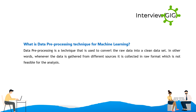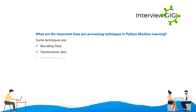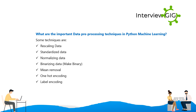What is data pre-processing? Data pre-processing is a technique used to convert raw data into a clean dataset. Whenever data is gathered from different sources it is collected in raw format, which is not feasible for analysis. Some important data pre-processing techniques in Python machine learning include rescaling data, standardizing data, normalizing data, binarizing data, mean removal, one-hot encoding, and label encoding.